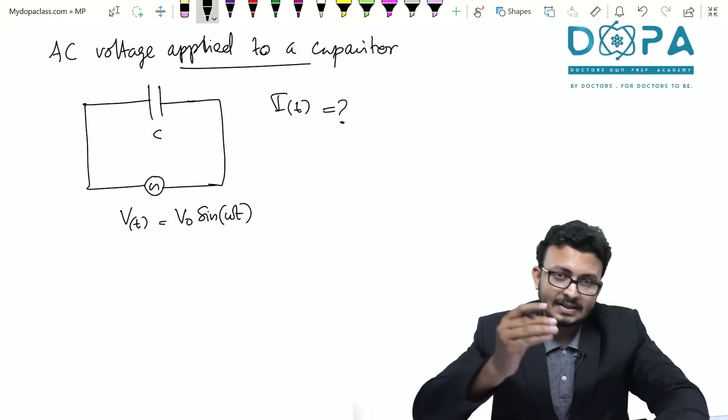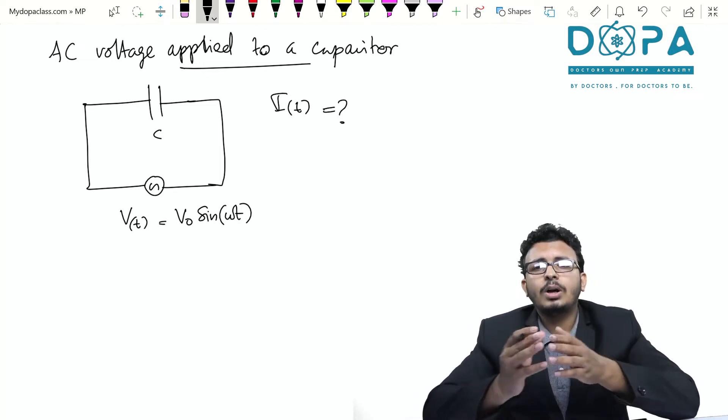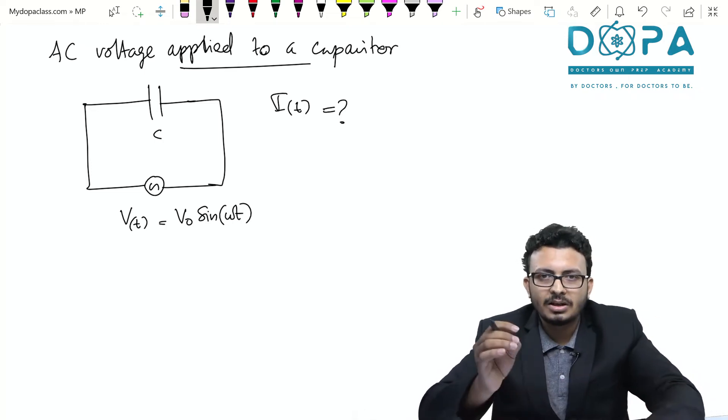Obviously since the voltage is varying with respect to time the current also must vary with respect to time. Now what is the relation between voltage and current in case of a capacitor? There is no such relation directly.